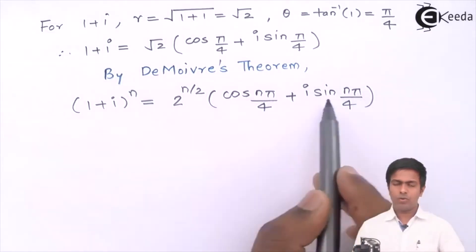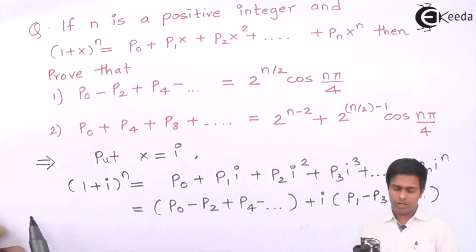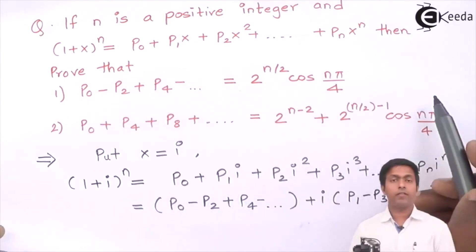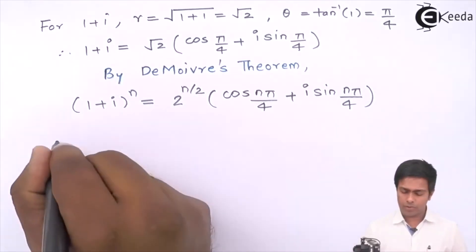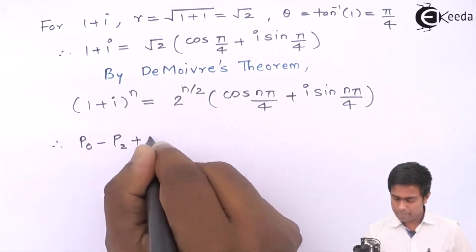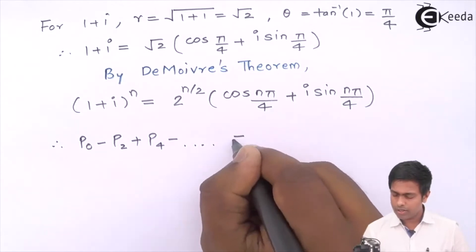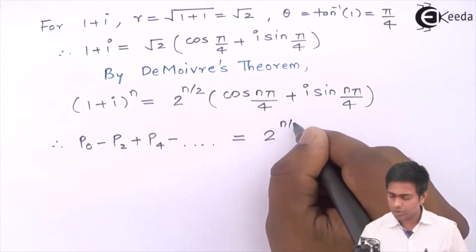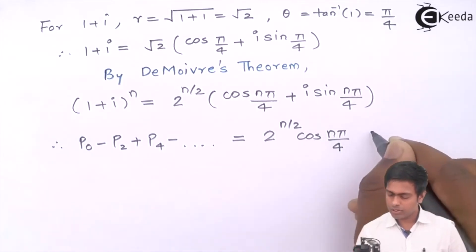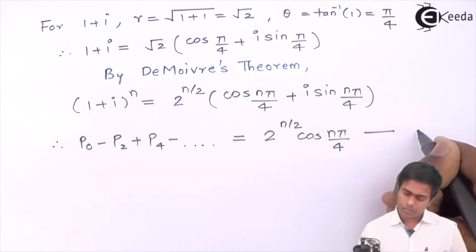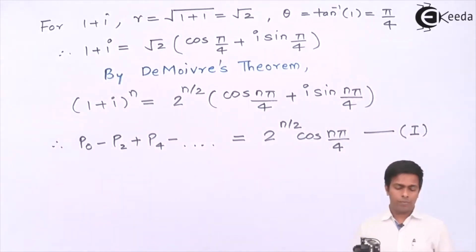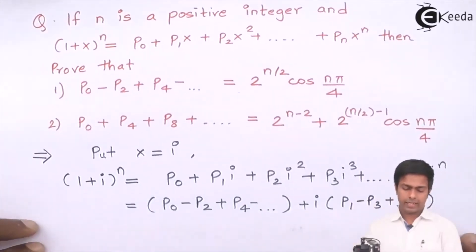If we substitute this value for (1+i)^n and compare the real parts of both sides, we get Result 1: p0 - p2 + p4 - ... = 2^(n/2) · cos(nπ/4). This completes the proof of Result 1.